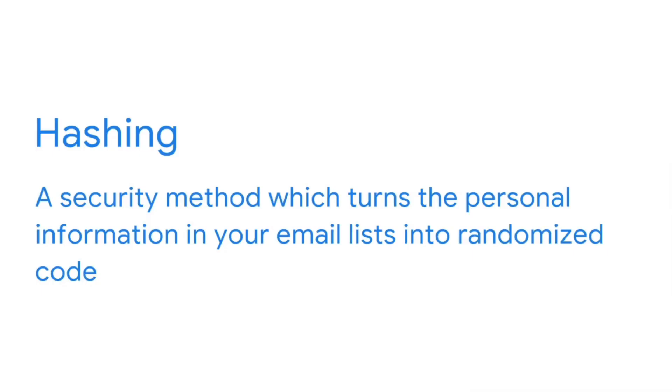Platforms like Google and Facebook hash all data when it's uploaded for this purpose. Hashing is a security method which turns the personal information in your email lists into an unreadable format. To start list-based remarketing, you'll upload your list of email contacts to the platform of your choice. Your audience will then start seeing your ads as they browse through that platform.